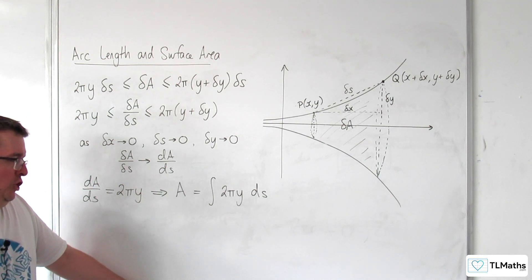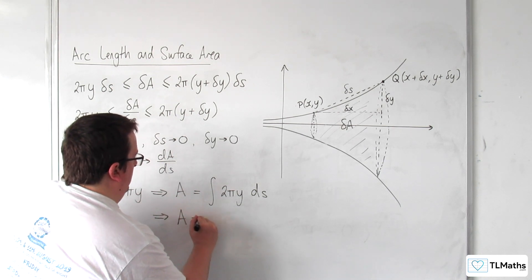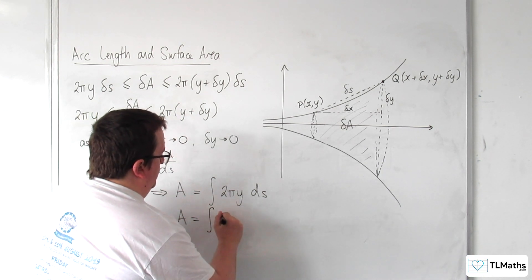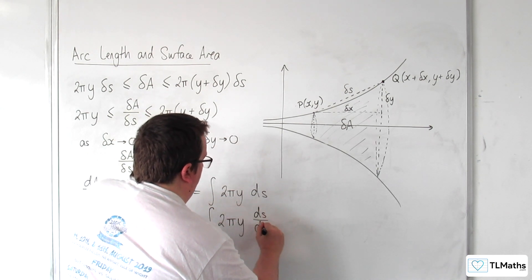At this point we could use a substitution, a change of variables, and say that A is equal to the integral of 2πy dS/dx dx.